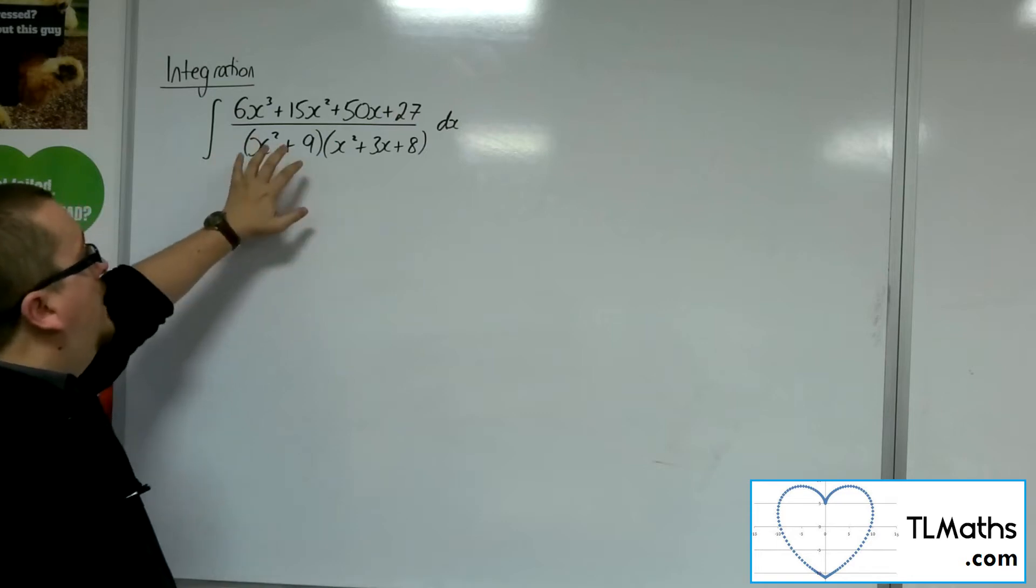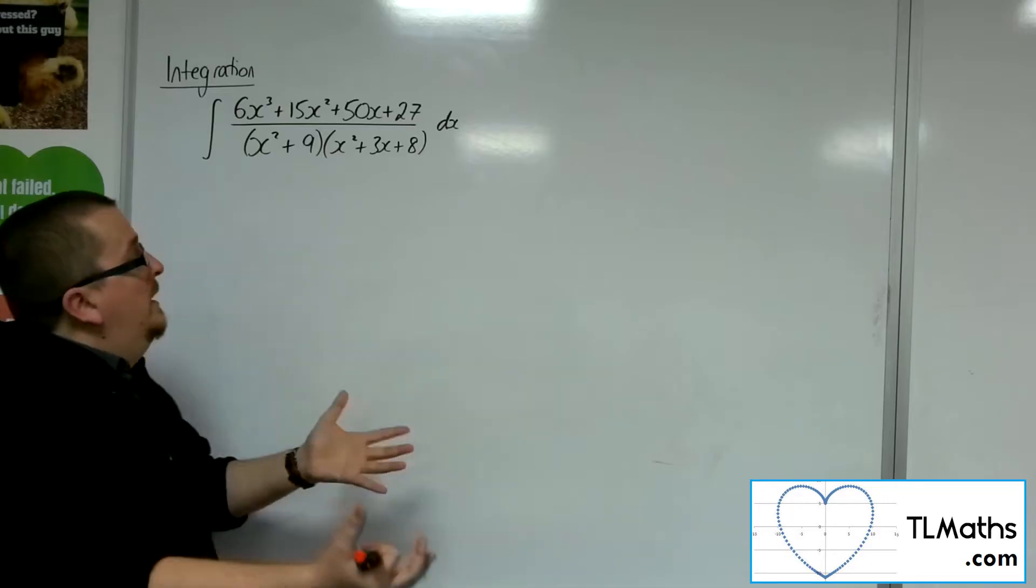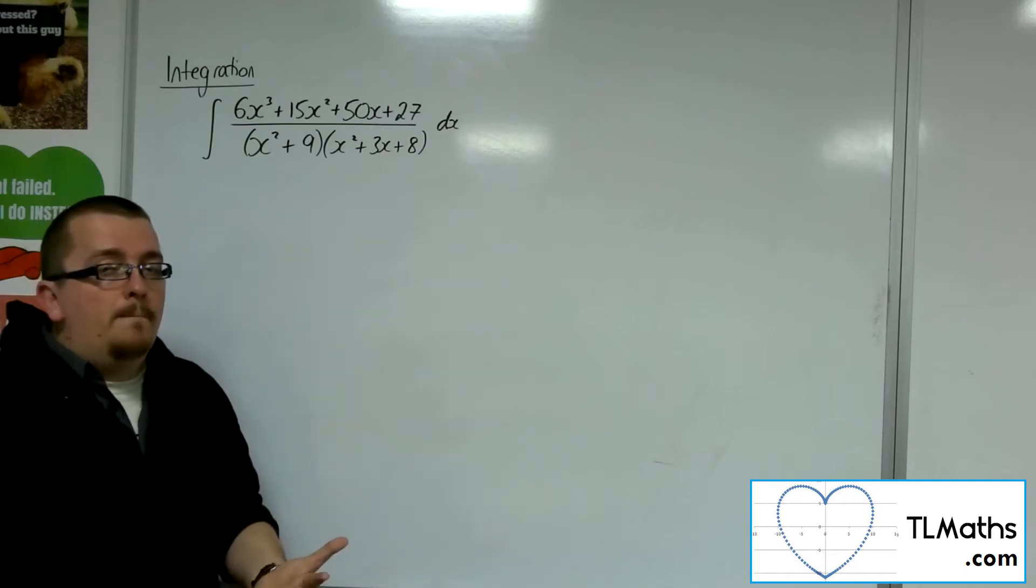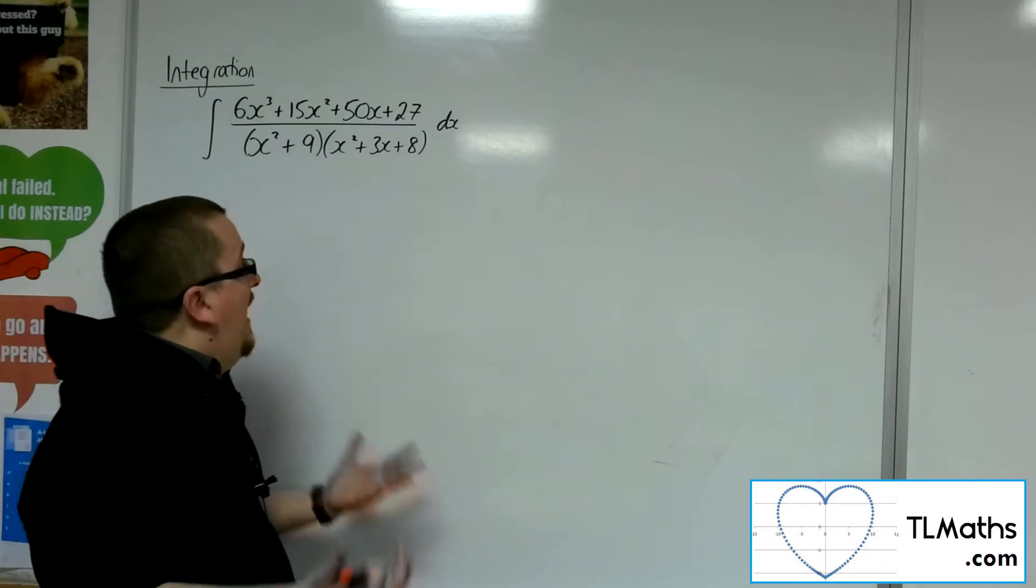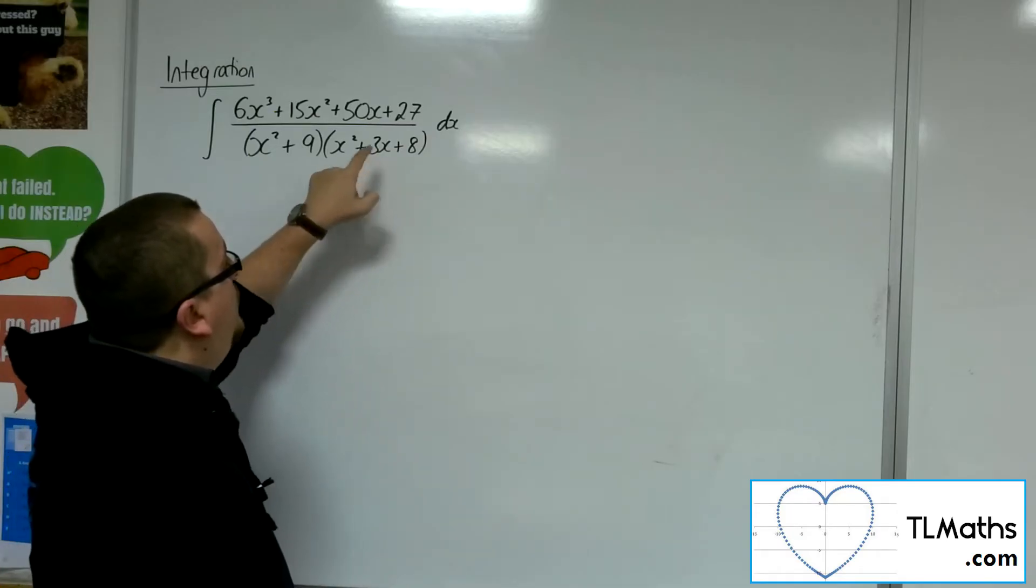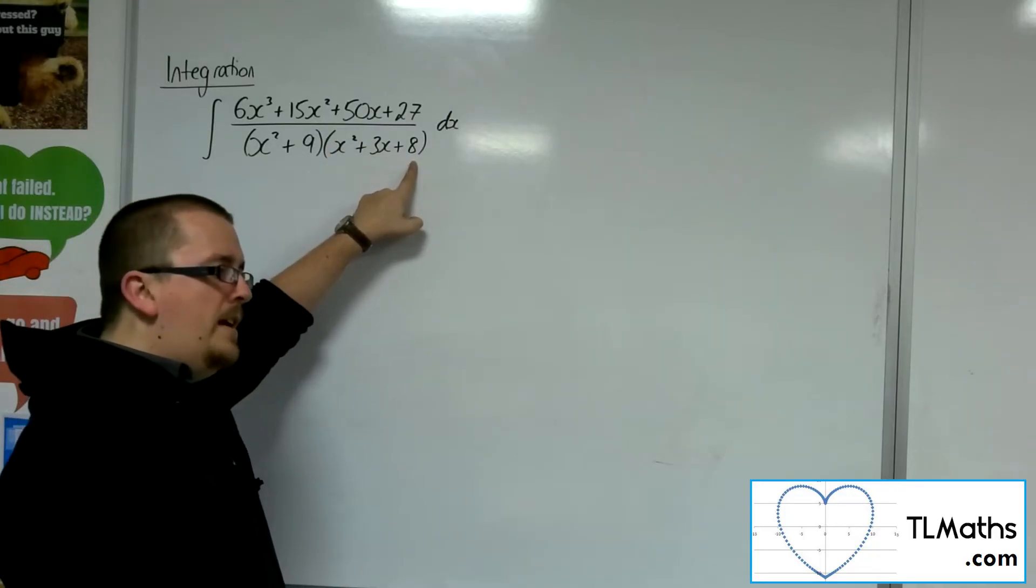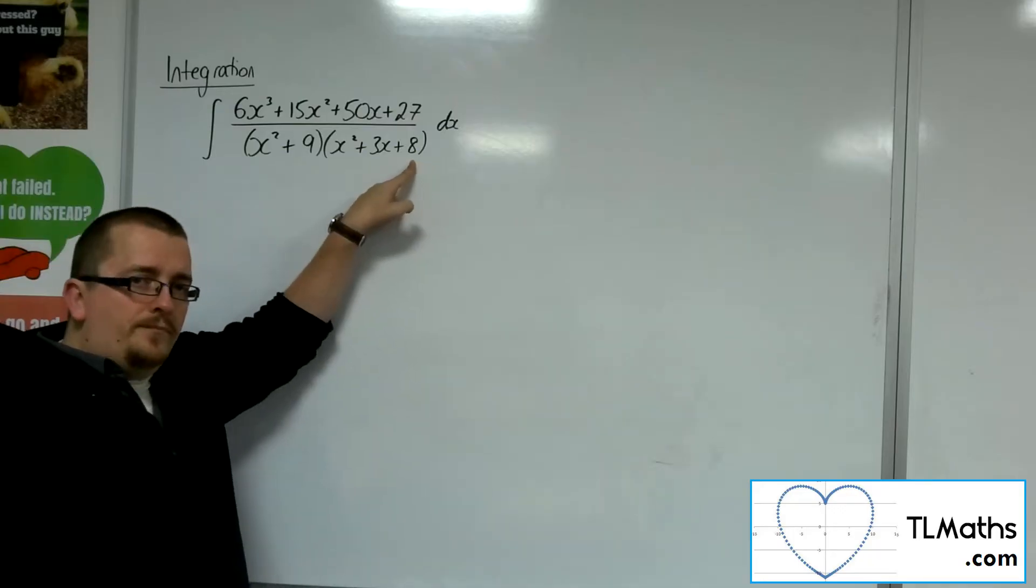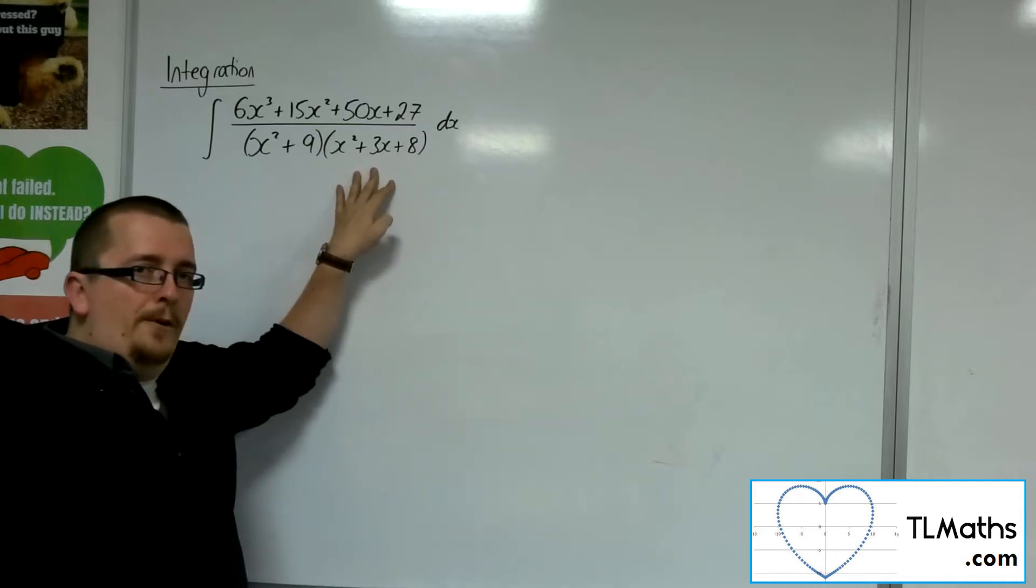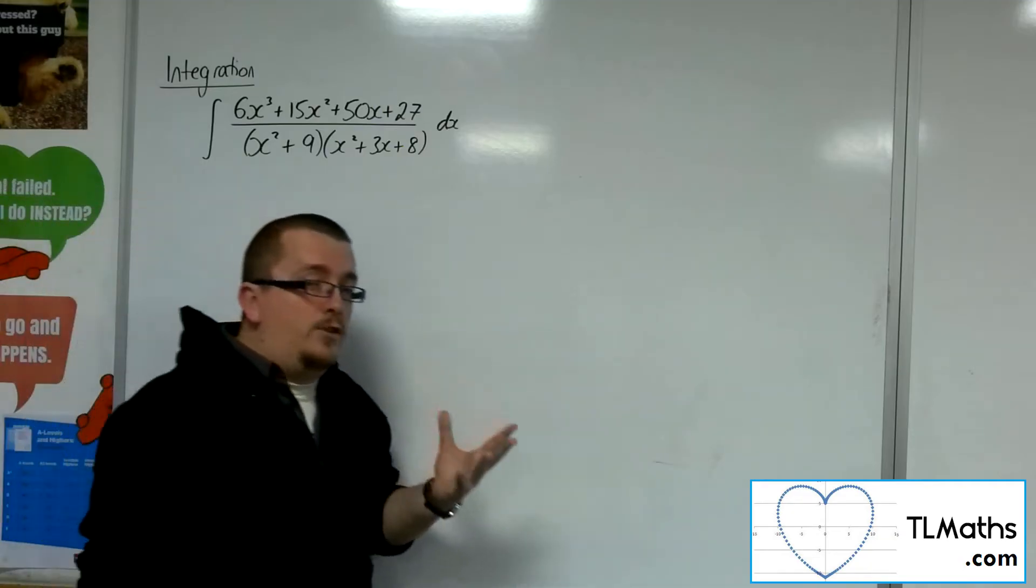This won't factorize. Does x squared plus 9 equals 0 have any real roots? It doesn't. Does x squared plus 3x plus 8 equals 0 have any real roots either? That's not so obvious. However, the discriminant b squared minus 4ac is 9, so 3 squared minus 4 lots of 1 times 8. So 9 take away 32. So yes, the discriminant will be negative. So this has no real roots either. So neither can be factorized.